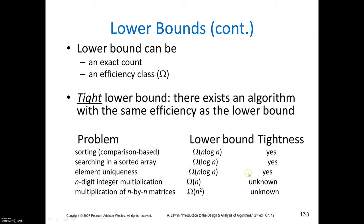For element uniqueness, is the tight lower bound n log n (base 2)? Yes. This can be solved in two stages: first, arrange the n elements in some order using sorting, then check for uniqueness. Applying merge sort gives efficiency n log n (base 2), and checking uniqueness requires n minus 1 comparisons in the worst case, so the overall efficiency is dominated by the sorting part — n log n (base 2).